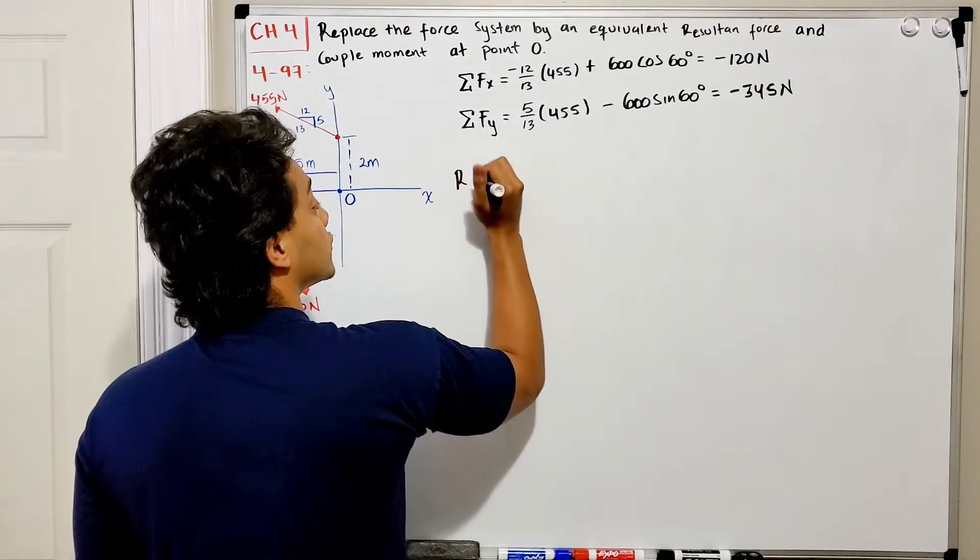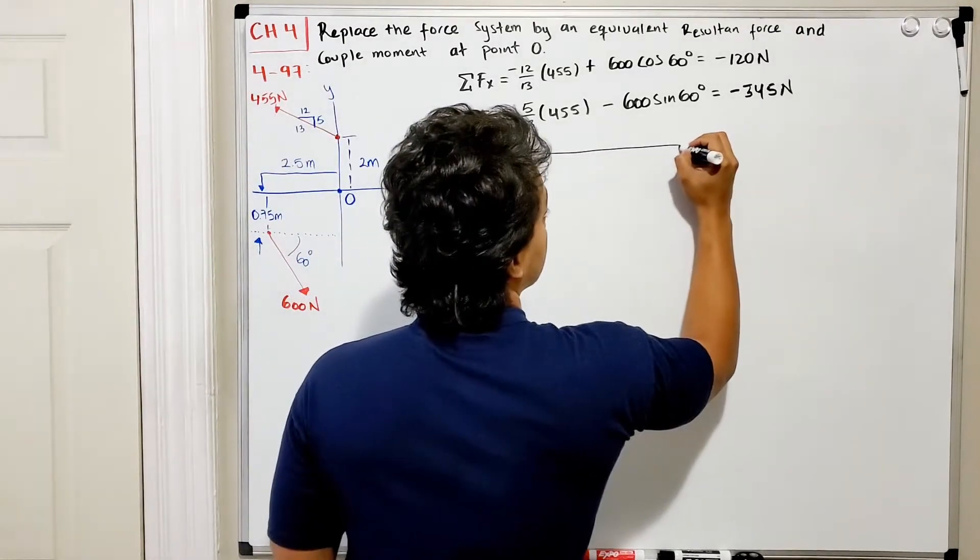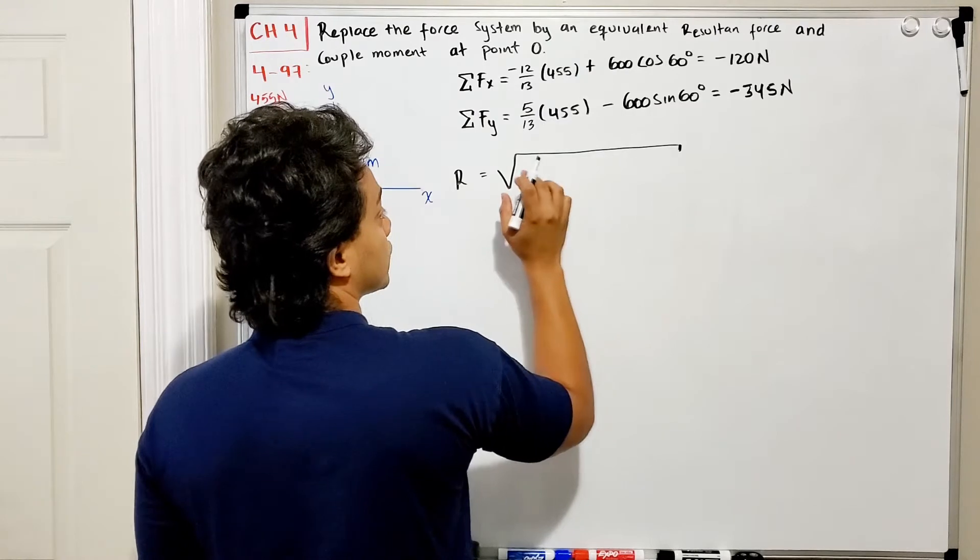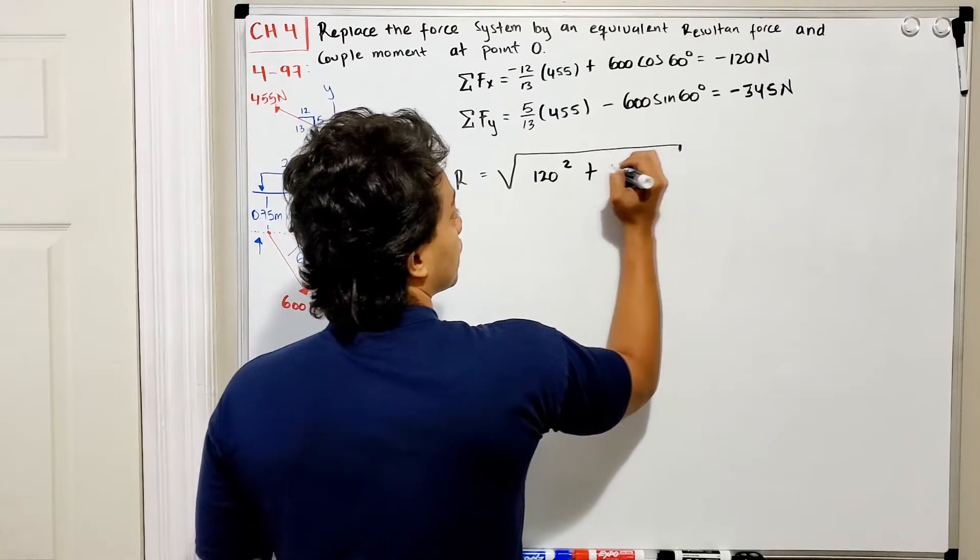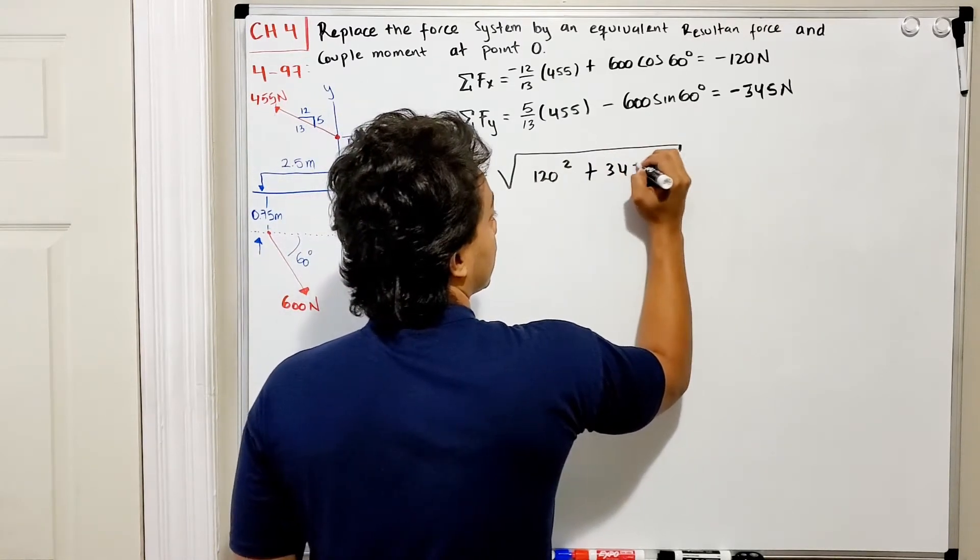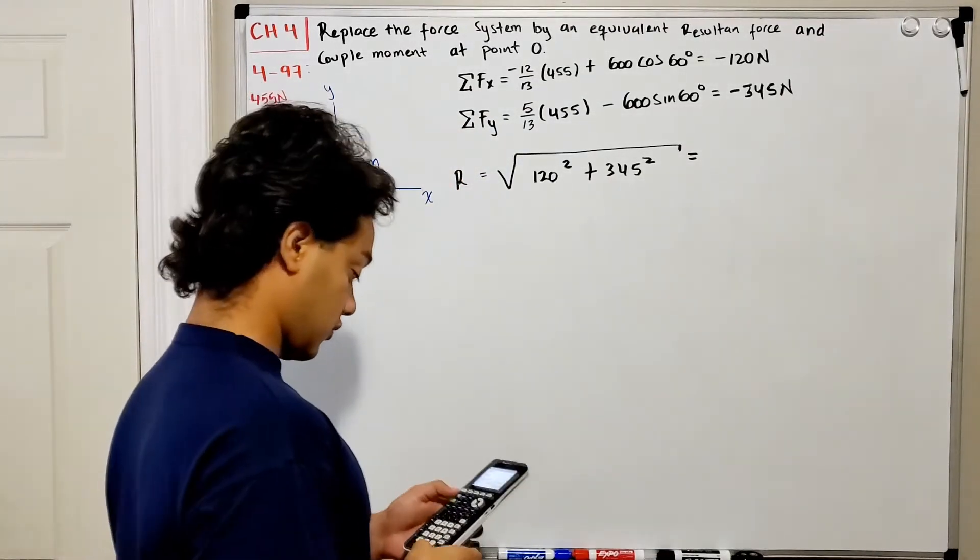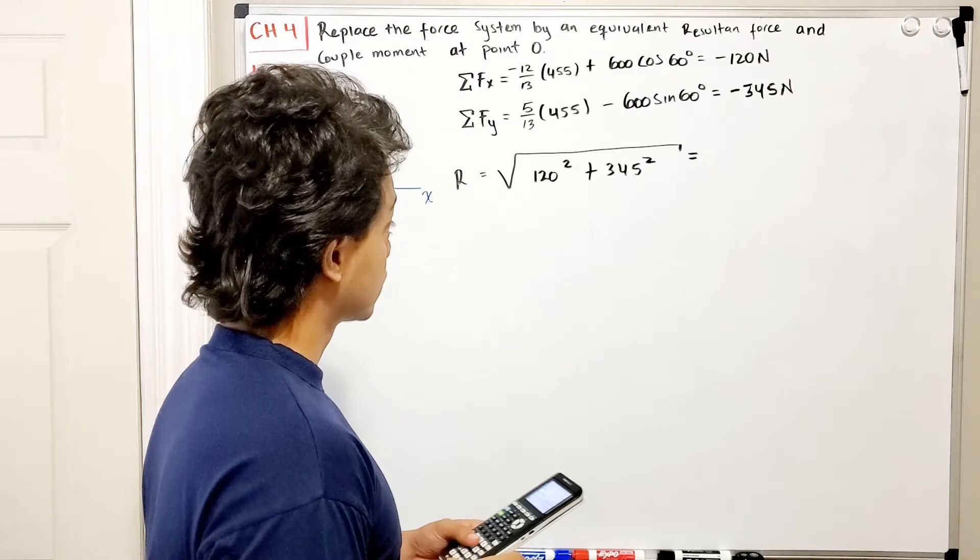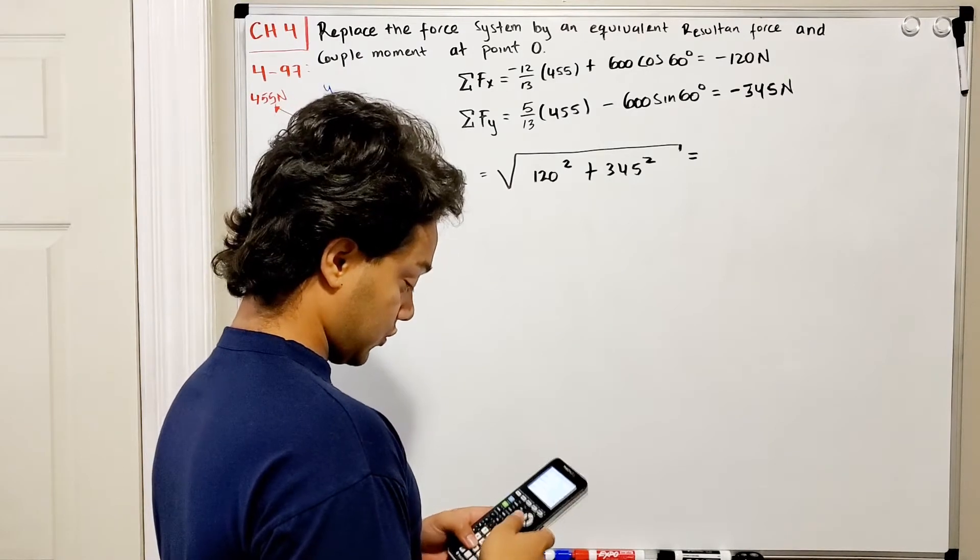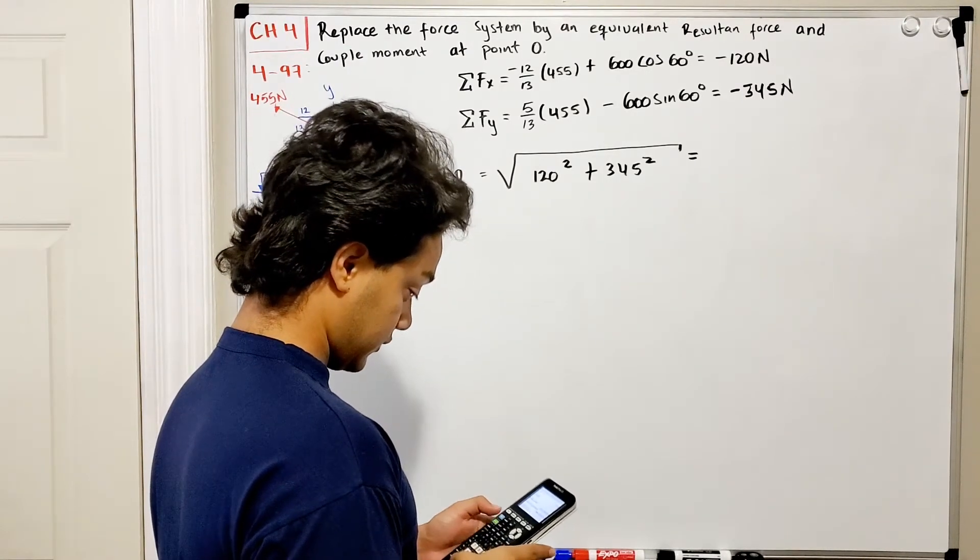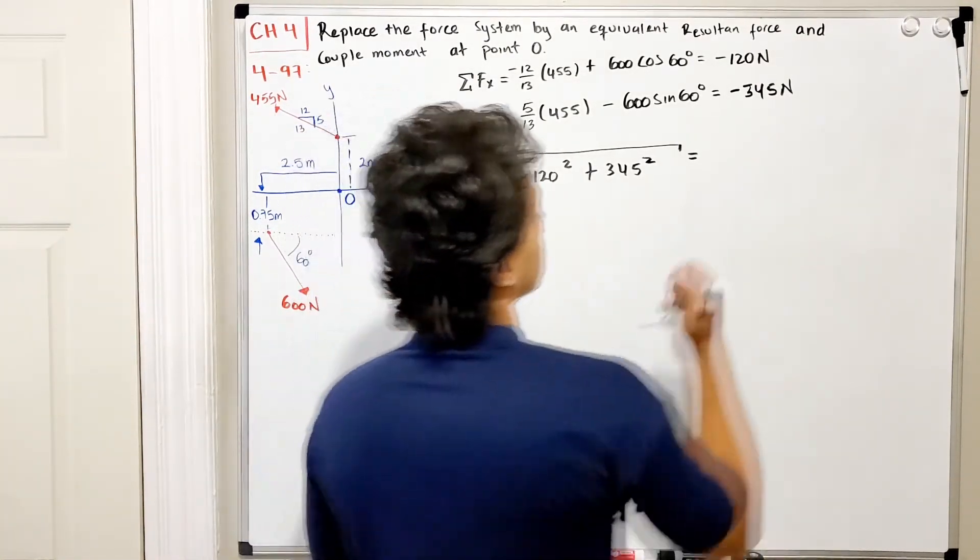Now the resultant force magnitude equals the square root of these two components squared. So square root of 120 squared plus 345 squared. Using our calculator, this gives 365 N.